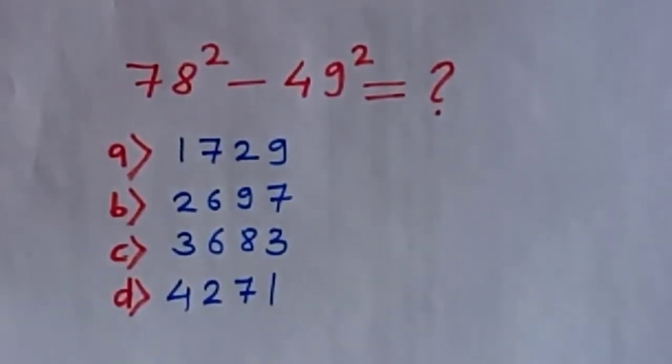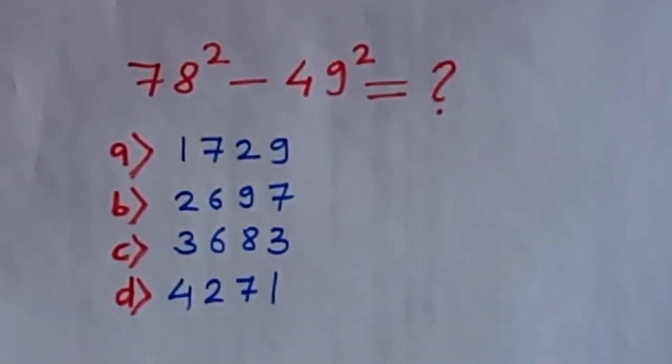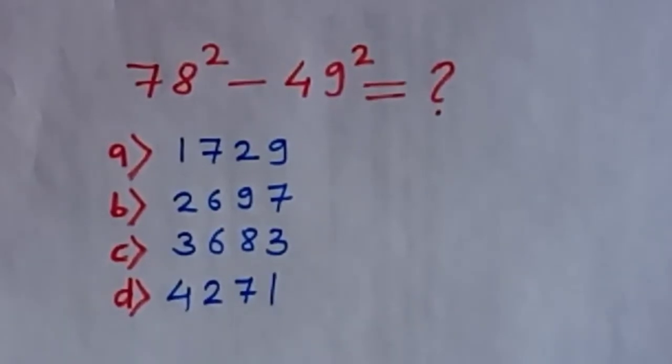We will take this first example: 78² - 49². Four options are given. From these options we are going to find the exact answer.